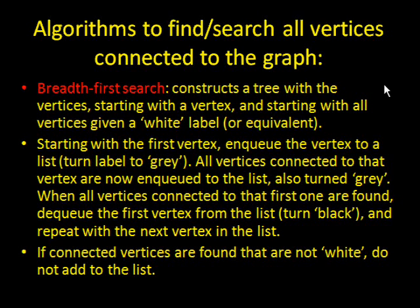Now, if you continue this pattern again and again, until you eventually dequeue everything in the list, you'll be done. Also, if you find connected vertices that are not white, that means you've already found them already, then you do not add them to the list because you don't want to repeat yourself in. Go do this indefinitely.